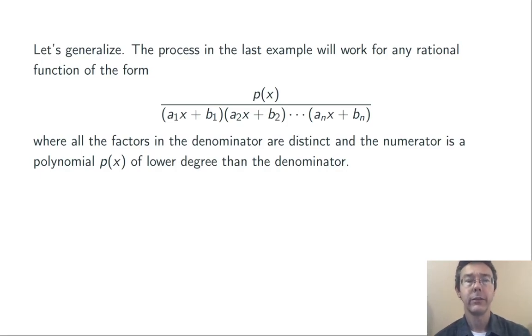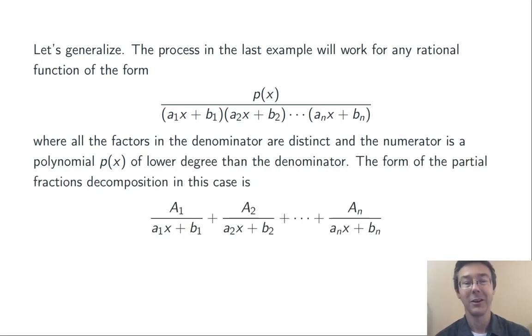Let's generalize this a little bit. Suppose we have a rational function, one polynomial over another, where the denominator can be factored as a product of distinct linear terms, (a₁x + b₁)(a₂x + b₂), and so on. If the polynomial on top has a lower degree than the polynomial on the bottom, then the exact process that we just did is going to work.